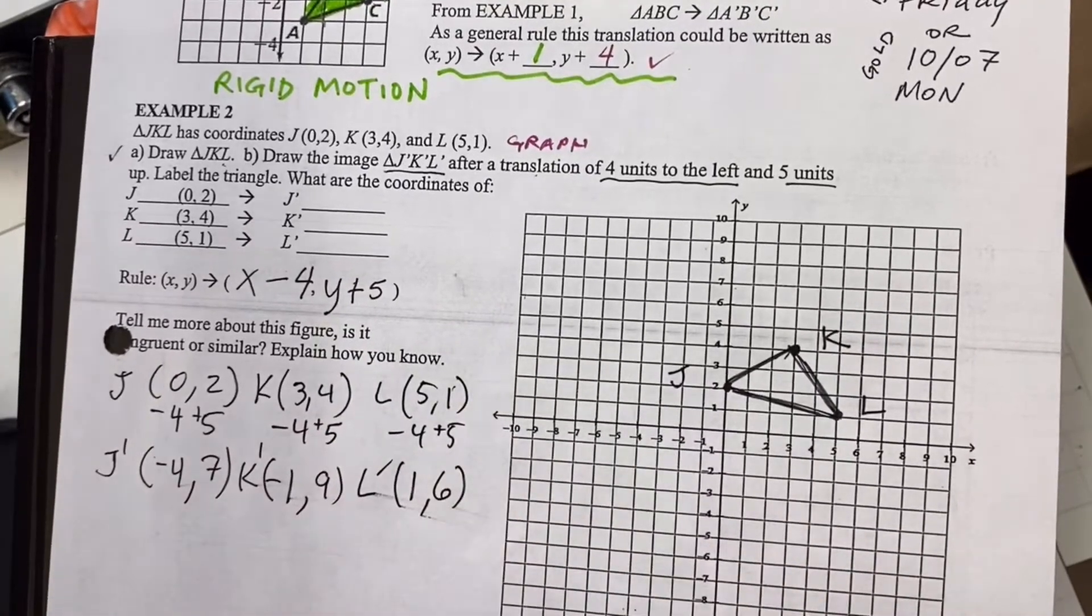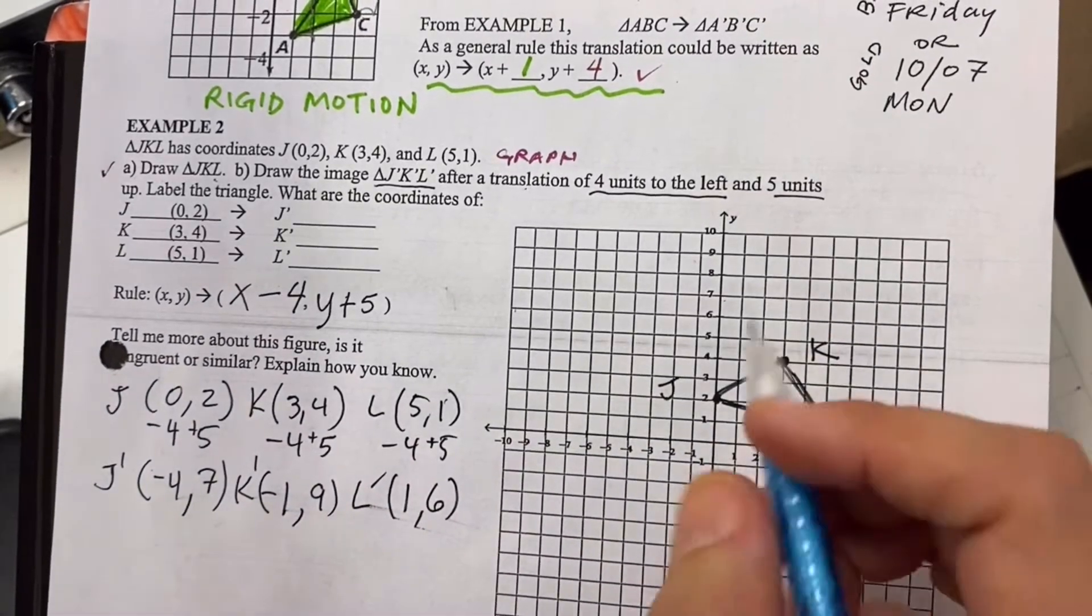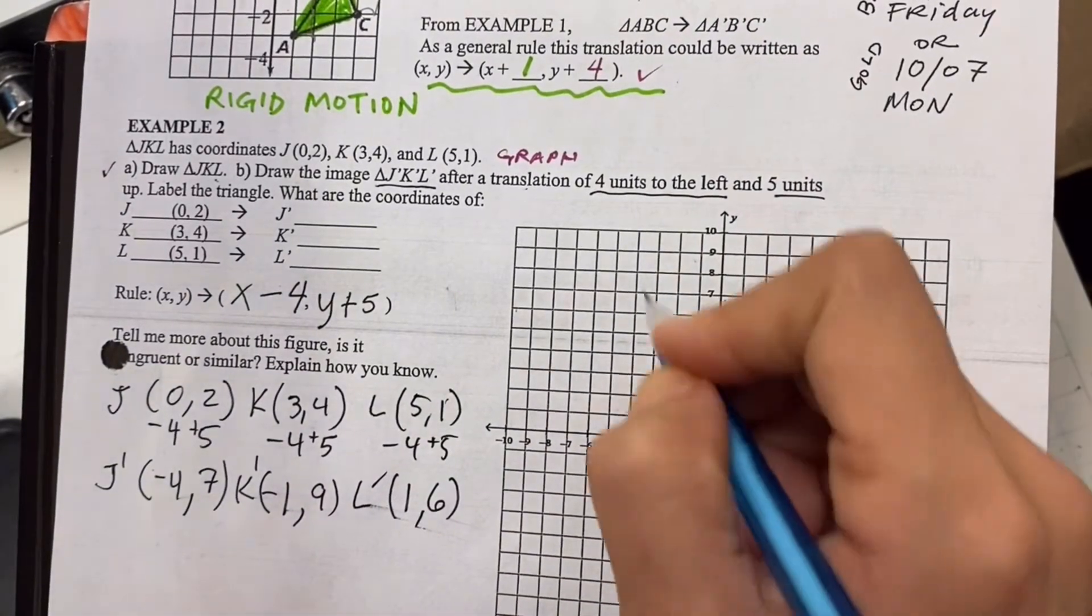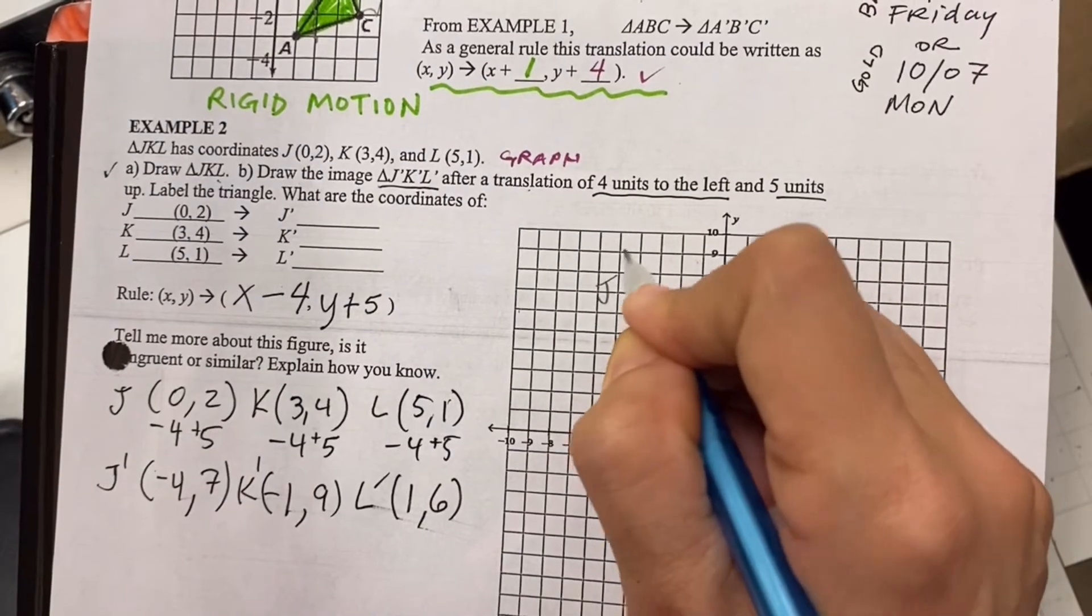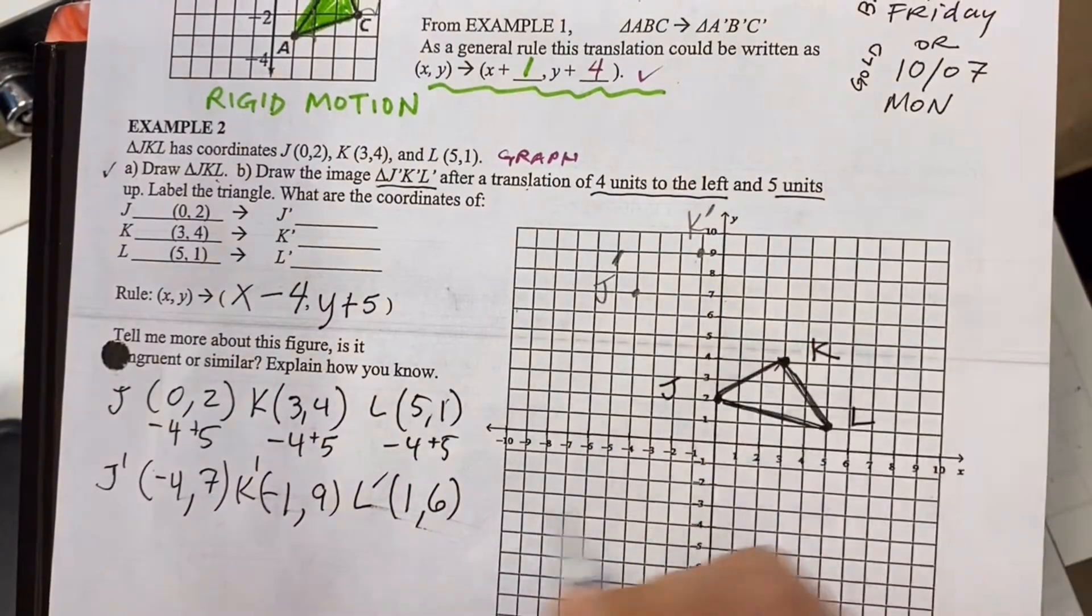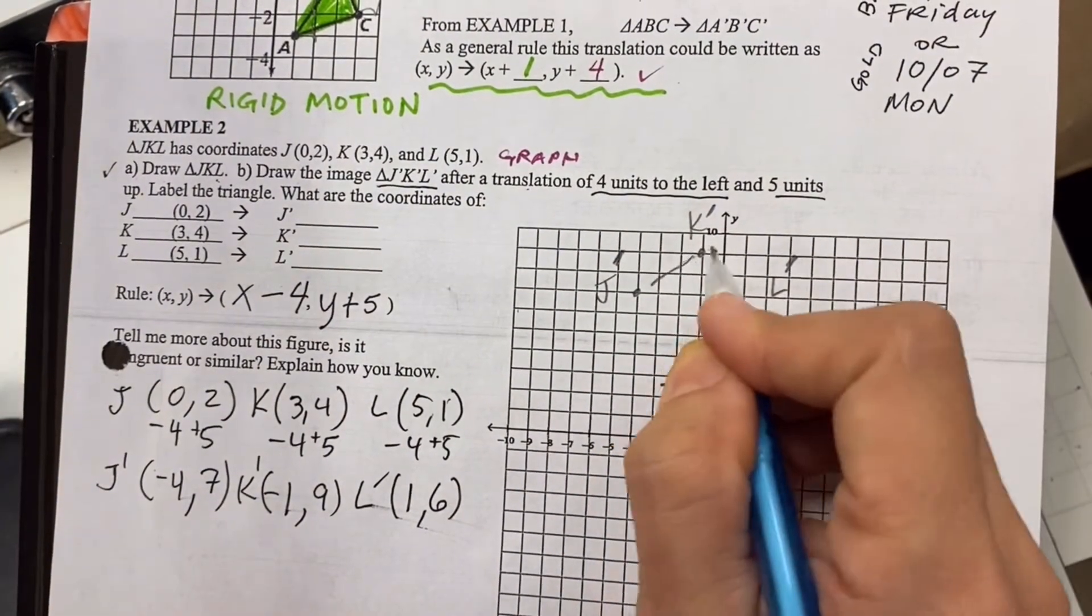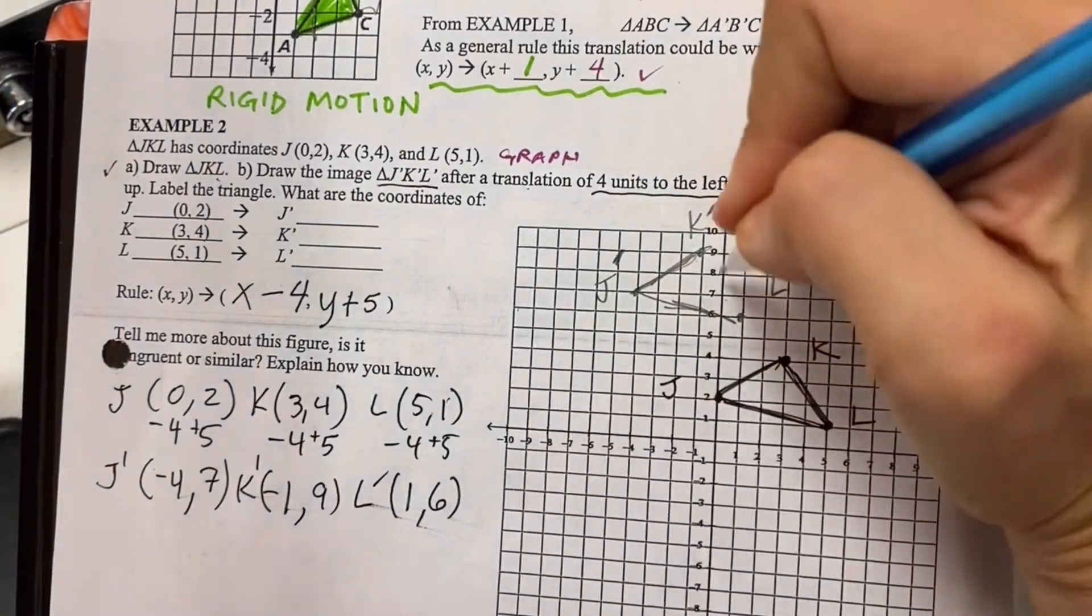Now let's graph this and see if we're on the right track. So I'm not sure if I made a math mistake, so I'm just going to use a pencil. Negative four, seven, J prime. Negative one, nine, K prime. One, six, L prime.